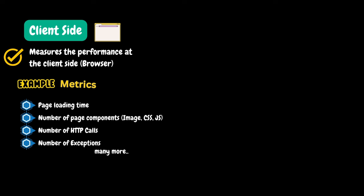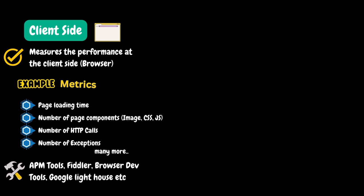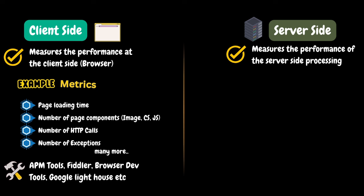Client-side metrics include the number of HTTP calls, number of exceptions, and many more. APM tools like Dynatrace provide client-side monitoring and also support real user monitoring. Other tools like Fiddler, browser developer tools, and Google Lighthouse are also used to observe client-side performance.